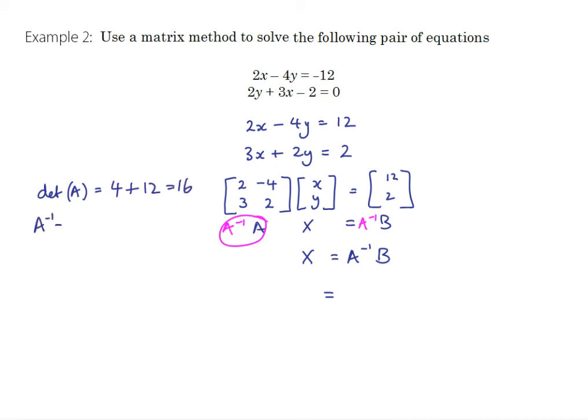Inverse of a, let's work that out. The determinant is 4 minus minus 12 so 16, which means that the inverse is 1 on 16, swap those which makes no difference, multiply by negative 1. So we have 1 on 16 times the matrix 2, 4, negative 3, 2 times 12, 2.